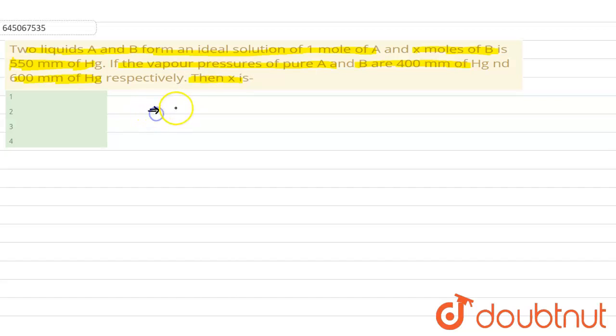First of all, the number of mols of A given is equal to 1, number of mols of B given is equal to x.